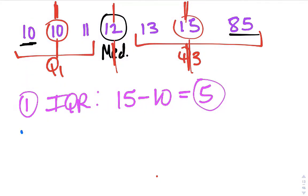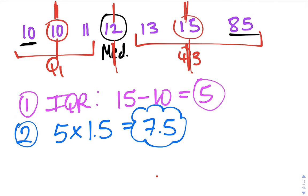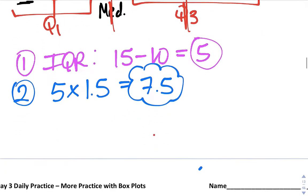The second step is to find what I call the magic number, and that would be your interquartile range times 1.5. So whatever your interquartile range is, in this case five times 1.5, and that would be 7.5. This is our magic number. Our magic number helps us find the fences. Anything outside the fences is an outlier.